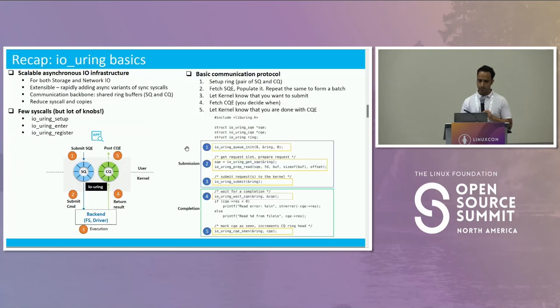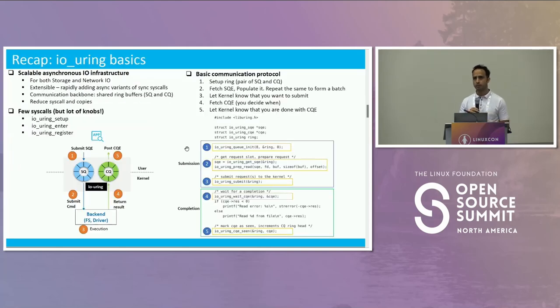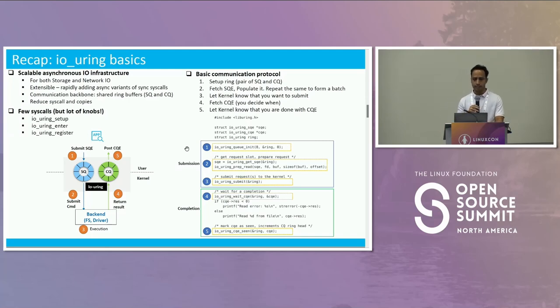Now, before we go about what the alternative is in io_uring, let's see some fundamentals. io_uring, if you look at this figure, is operating at the boundary of user and kernel space. Similar to VFS, you can think of it as providing scalable asynchronous infrastructure at that boundary.